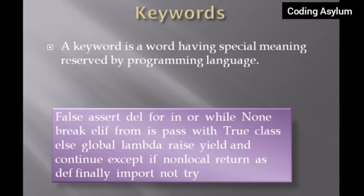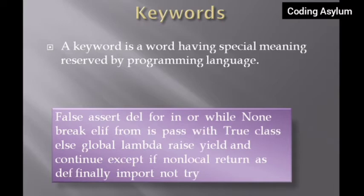Let's start with keywords. A keyword is a word having a special meaning reserved by a programming language — not only Python, but every programming language has some reserved words with special meaning. You can see examples on screen: False, as, del, for, in, and so forth. These are all keywords in Python. You need not define them — you can use them independently.